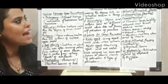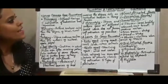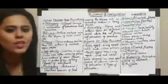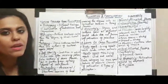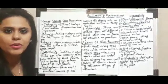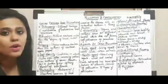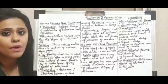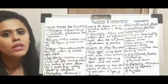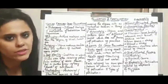Continuing with pollination and fertilization. From the last slide, we started with nature favors cross-pollination. The reason is that the offspring produced by self-pollination are not healthy and not of new varieties. Therefore, nature always favors cross-pollination.